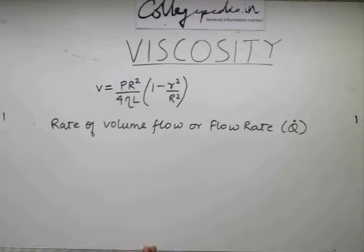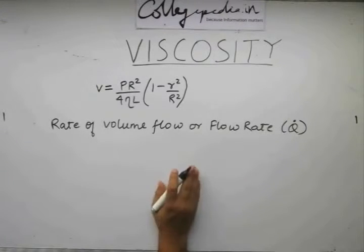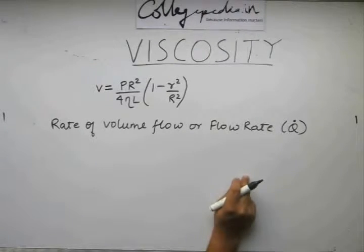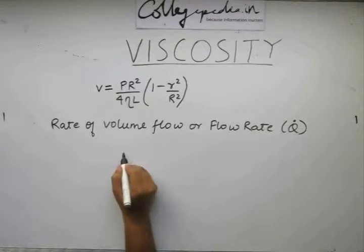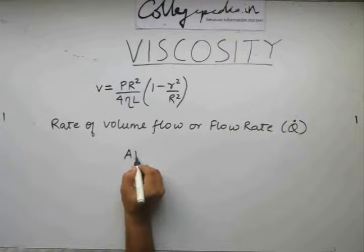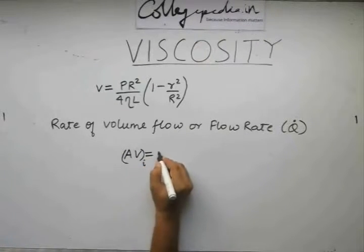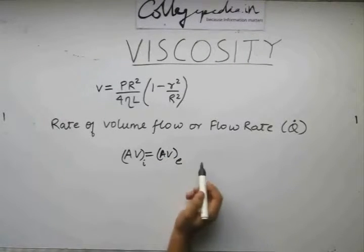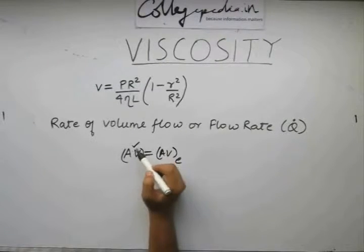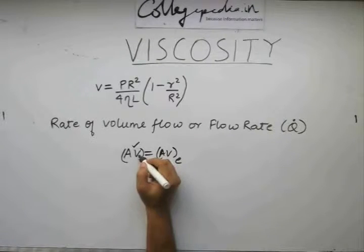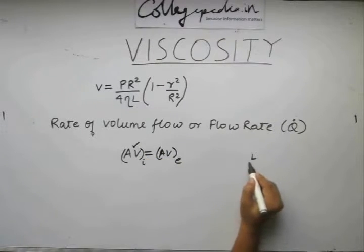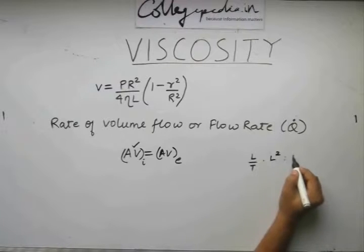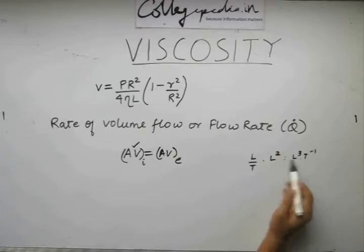The volume flow rate can be found out if we recall in Bernoulli's equation we had considered the volume flow rate being equal at both ends or both ends of the stream line. So we said for the equation of continuity to hold, the volume entering should be the volume leaving. A times v was our volume flow rate because velocity changes with time. Velocity contains a length term and a time term, area contains two length terms. So this is basically l cube t minus 1. This is the dimensions of av.